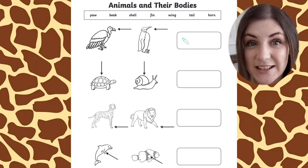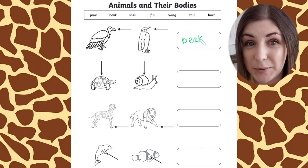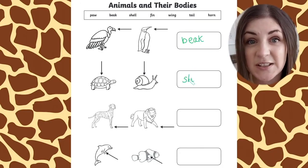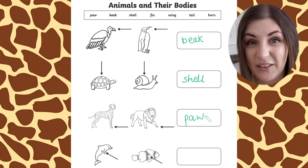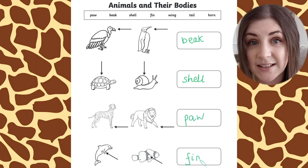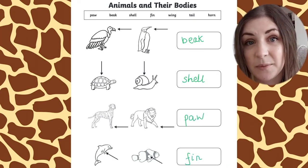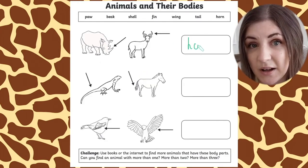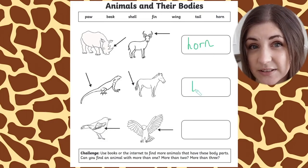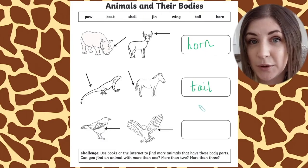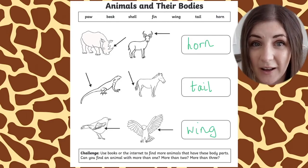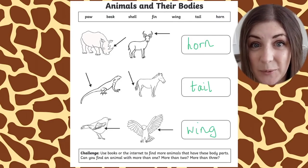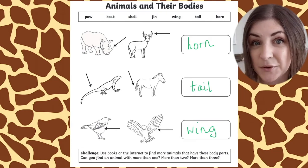In this activity, children need to name different animal body parts. You should focus on the scientific vocabulary — for example, an animal has a paw rather than a foot. To extend this learning, you could think about animals that have the same body parts. Do they have other similar characteristics? For instance, do all animals with fins live in water? It's also a great chance to talk about why animals have certain body parts and what they are used for, for instance beaks or shells.